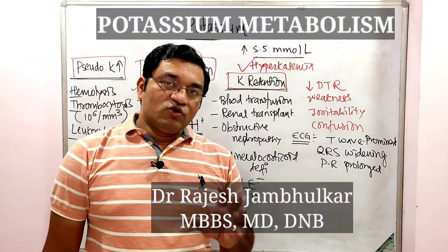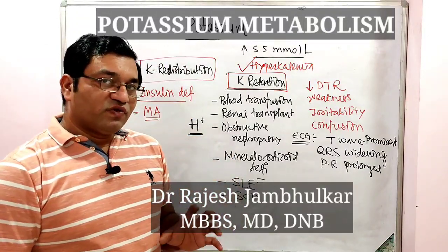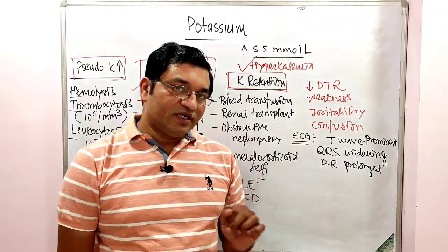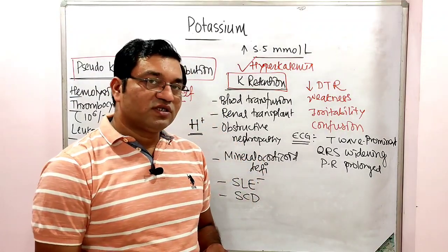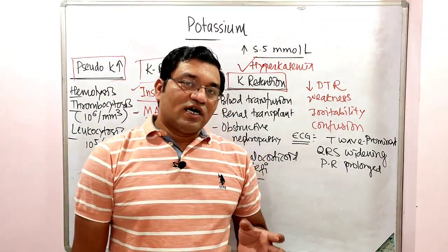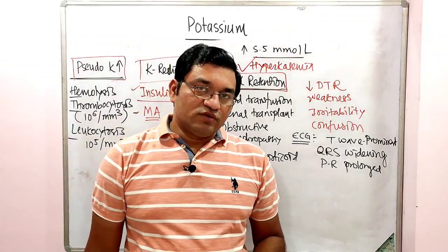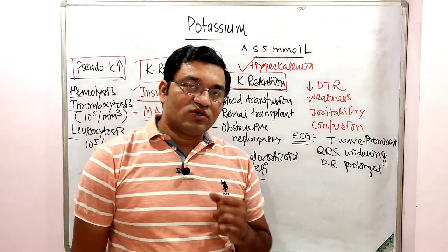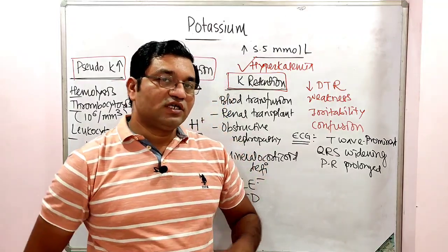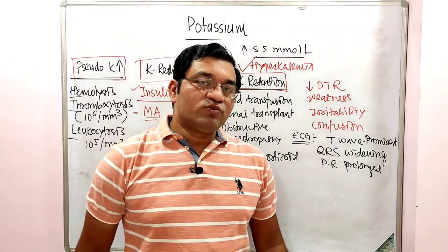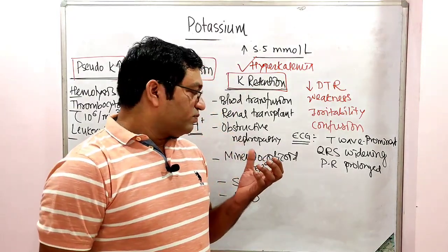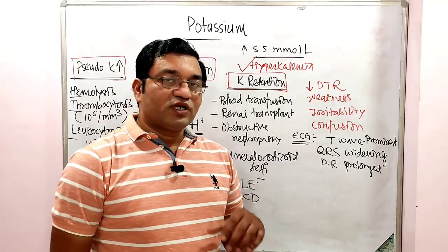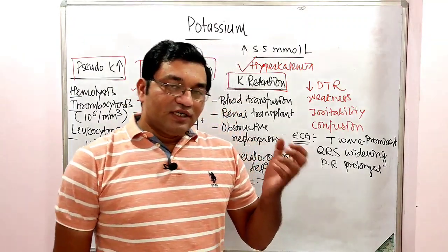Remember, you may get an exam question asking why there is hyperkalemia in metabolic acidosis or diabetic ketoacidosis, and why there is hypokalemia after giving insulin. The reason for hyperkalemia in diabetic ketoacidosis or metabolic acidosis is due to the cellular redistribution of potassium — specifically, the exchange of potassium with the hydrogen ion.